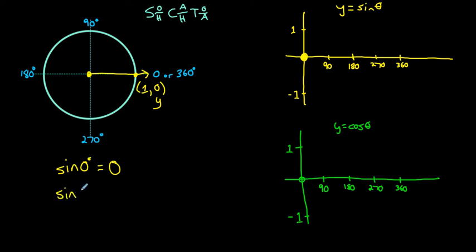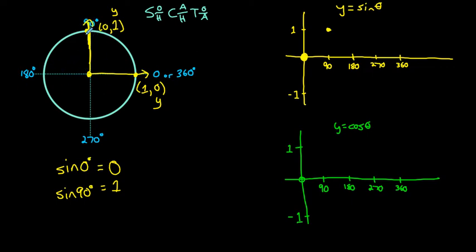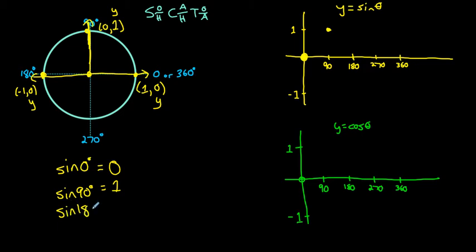If we rotate 90 degrees, the terminal arm intersects the unit circle at the point (0, 1). The y-coordinate is 1, so sine of 90 degrees equals 1 — that's the furthest we ever get from the x-axis, so the biggest the sine ratio can be is 1. When we've rotated 180 degrees, the intersection point is (−1, 0), and the y-coordinate is 0, so sine of 180 degrees is back to 0.